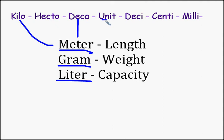And then this is our base unit. And then we can go into decimals or portions of a meter. So a tenth of a meter — deca means tenth — so a tenth of a meter is a decimeter.